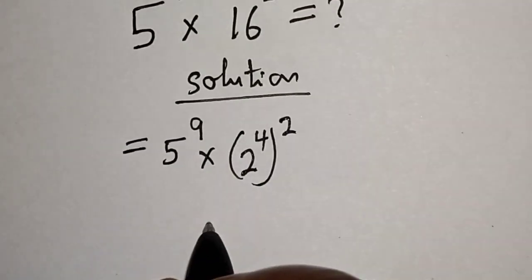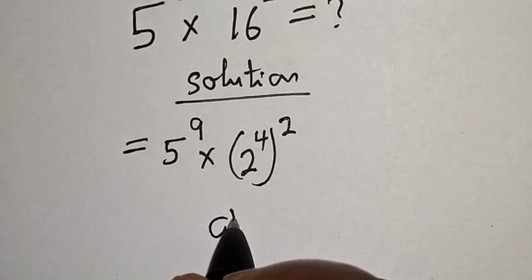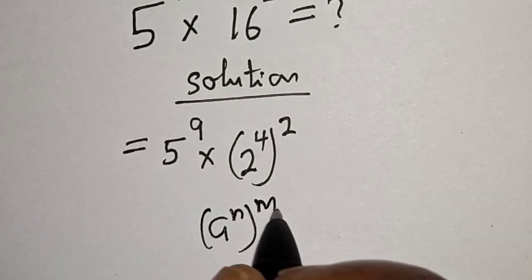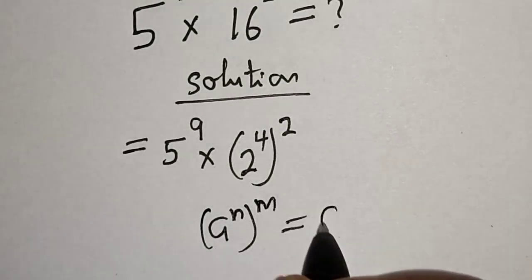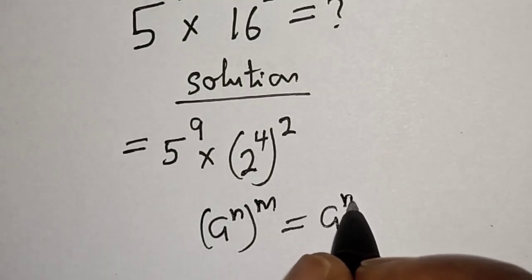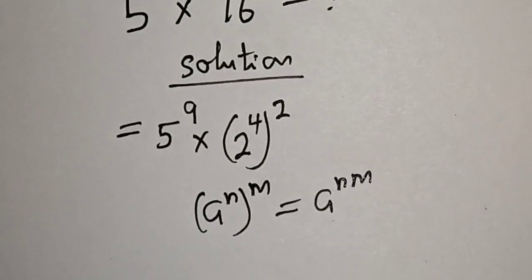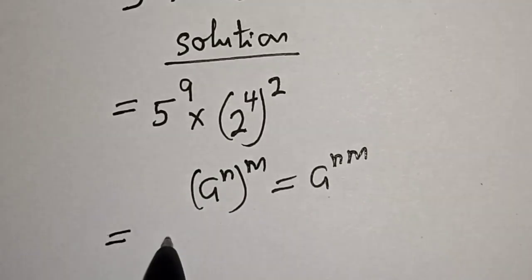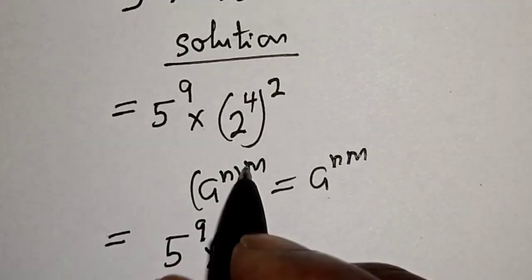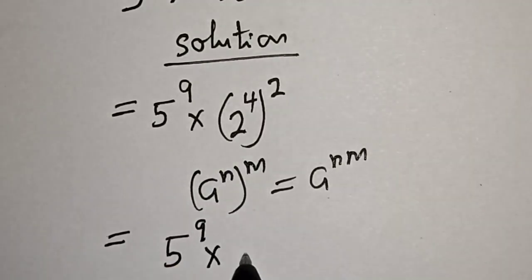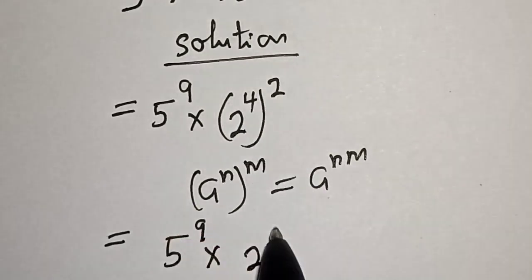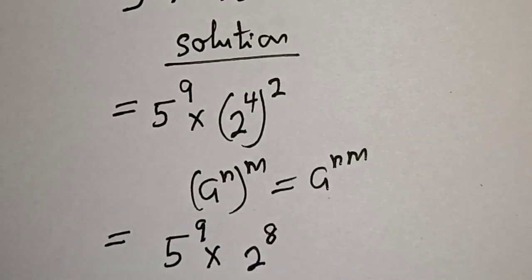The rule states that a raised to power n, raised to power m, is equal to a raised to power n times m. Applying this, we get 5 raised to power 9 multiplied by 2 raised to power 4 times 2, which is 8.